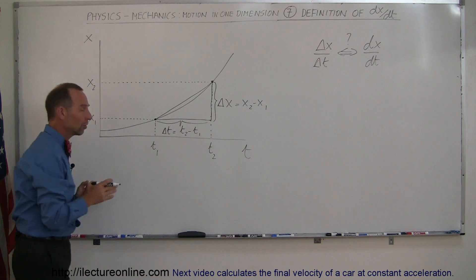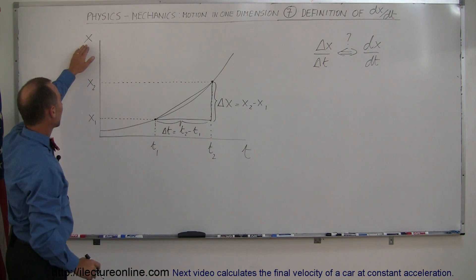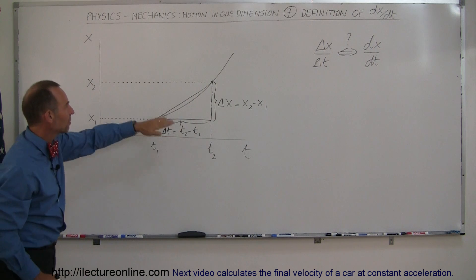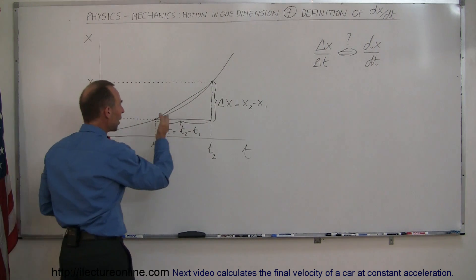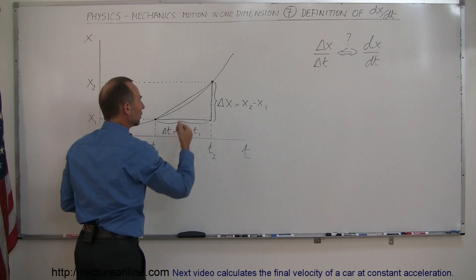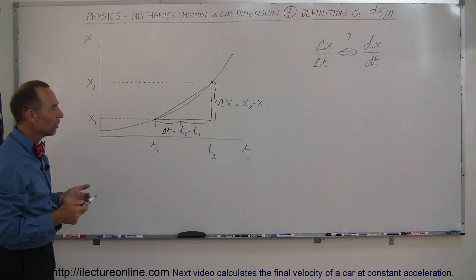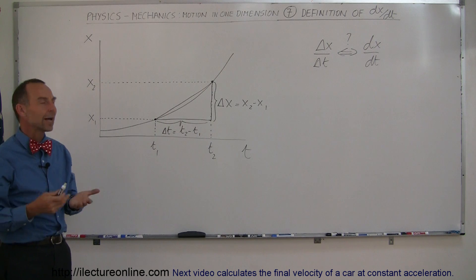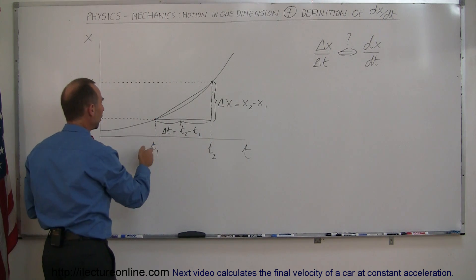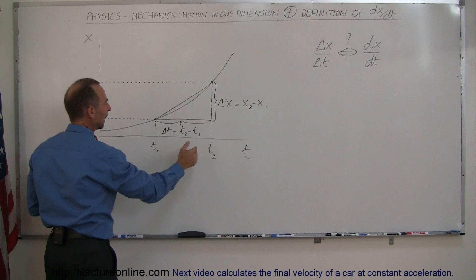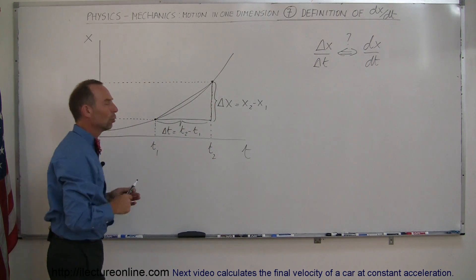Here we have a graph which shows motion for an object — we graph x versus t, position versus time. The fact that this is parabolic means that the speed is increasing constantly; there's an acceleration there, you can see that it's an accelerating object. At time t1 the object is at position x1, and at some later time t2 it is at position x2.